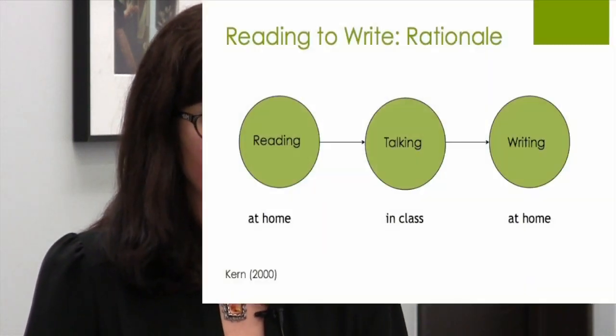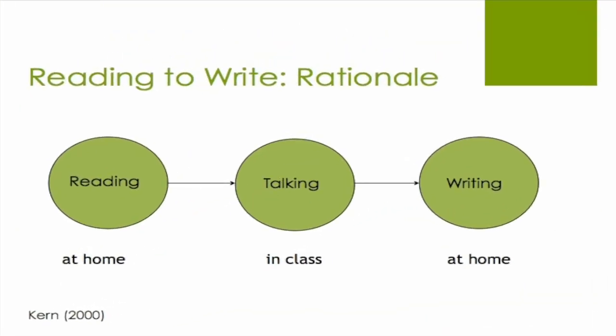Here you have a graphic of what a traditional way of thinking about reading and writing in foreign language courses often is, where students read a text at home, they come to class, they talk about it, they maybe prepare to write, and then they go home and write. What ends up happening is that learners are doing the things they find the most difficult on their own at home without any support. Reading and writing are not collaborative in any way — they're relegated to the home and then discussed in class.